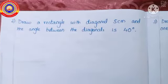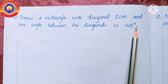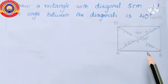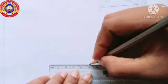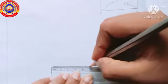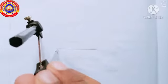Next, can you draw a rectangle with diagonal 5 centimeters and the angle between the diagonals is 40 degrees? With the given measurements, draw a rough figure for reference. The diagonal and the angle between the two diagonals are given. First, draw a diagonal of length 5 centimeters. The midpoint of this diagonal can be located by drawing its perpendicular bisector. Using a compass, measure 3/4 of the length and draw arcs on both sides at both endpoints, then join these two points.